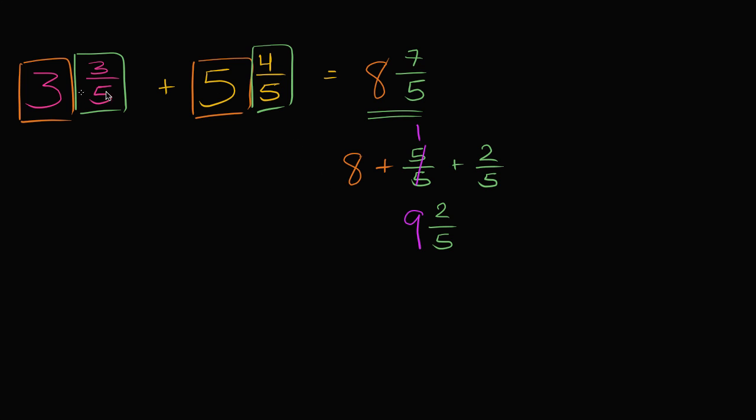So all I did here, I added it the same way that I did the first problem. But when I realized that this fraction part is greater than one, I separated it into one and then a fraction that is less than one. And that whole, I was able to add to the eight to get to nine, and then I would have two-fifths left over.